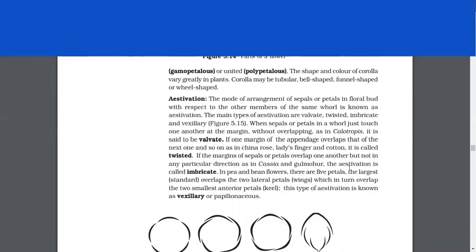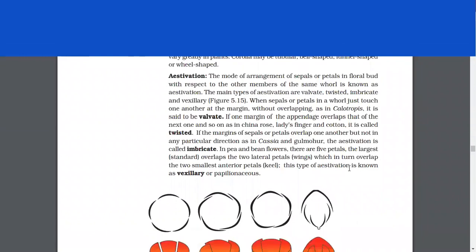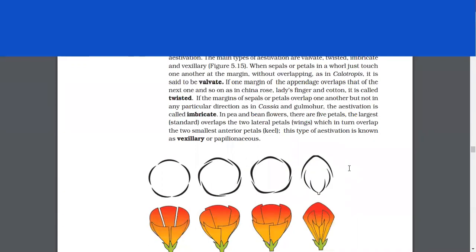Aestivation. The mode of arrangement of sepals or petals in a floral bud with respect to the other members of the same whorl is known as aestivation. The main types are valvate, twisted, imbricate, and vexillary. When sepals or petals in a whorl just touch one another at the margin without overlapping, as in Calotropis, it is said to be valvate. If one margin of the appendage overlaps that of the next one, and so on, as in china rose, lady's finger, and cotton, it is called twisted.